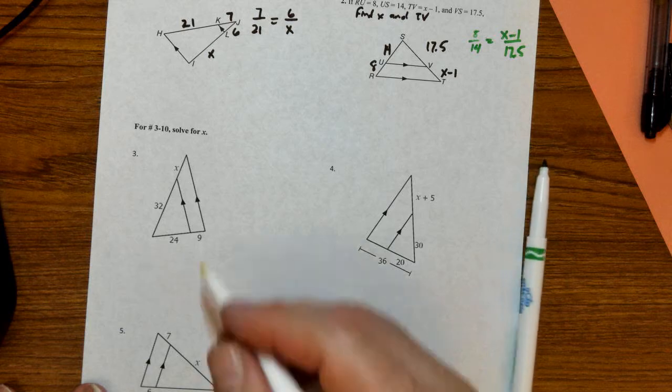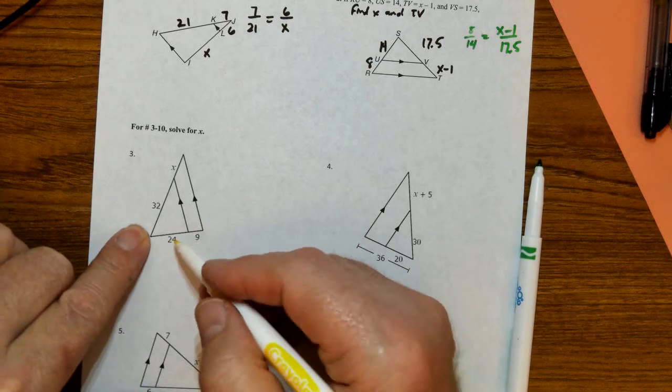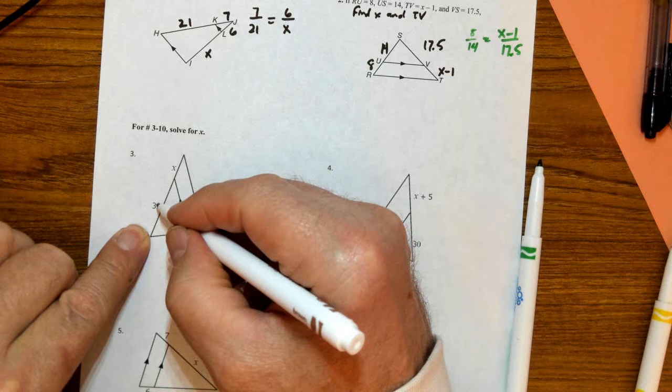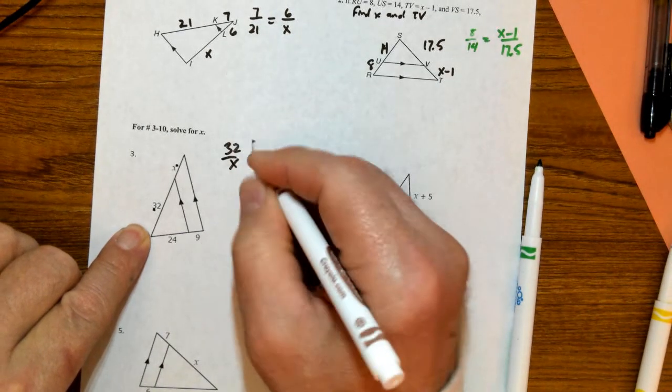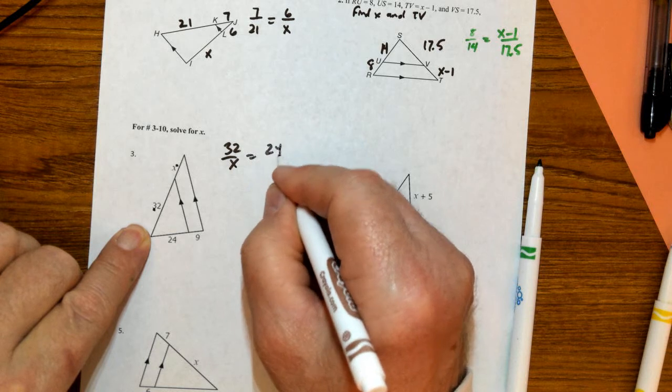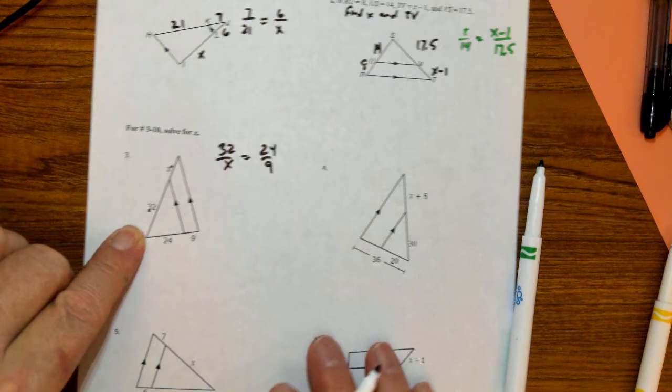Next one, you can do any order as long as you're consistent. So you can say on this side, 32 is to X as 24 is to 9. Do your cross product, solve for X.